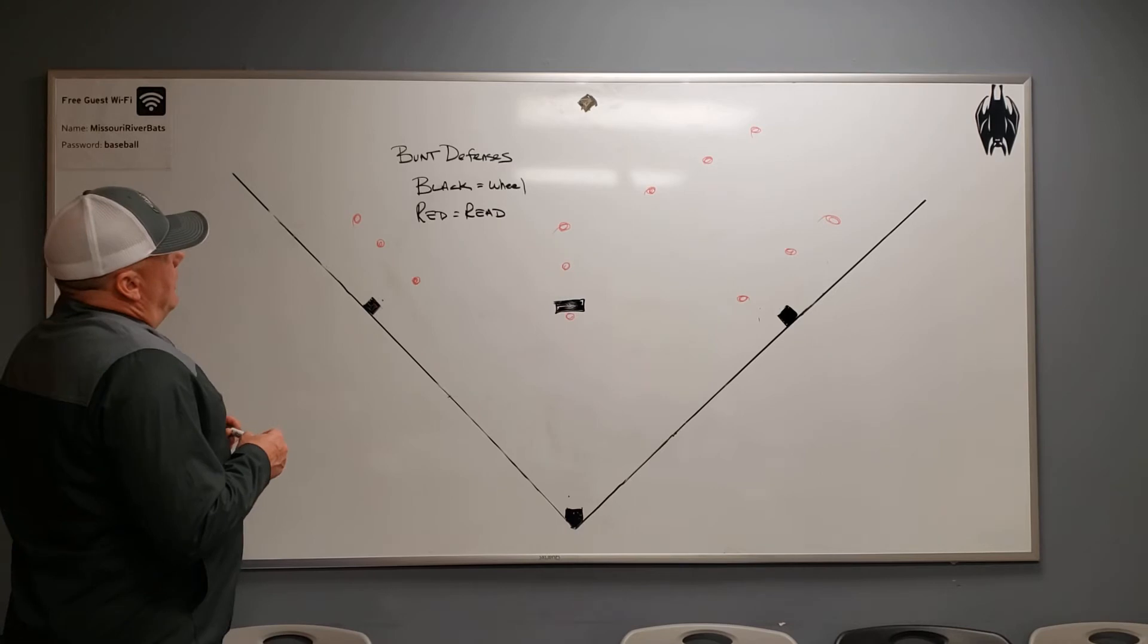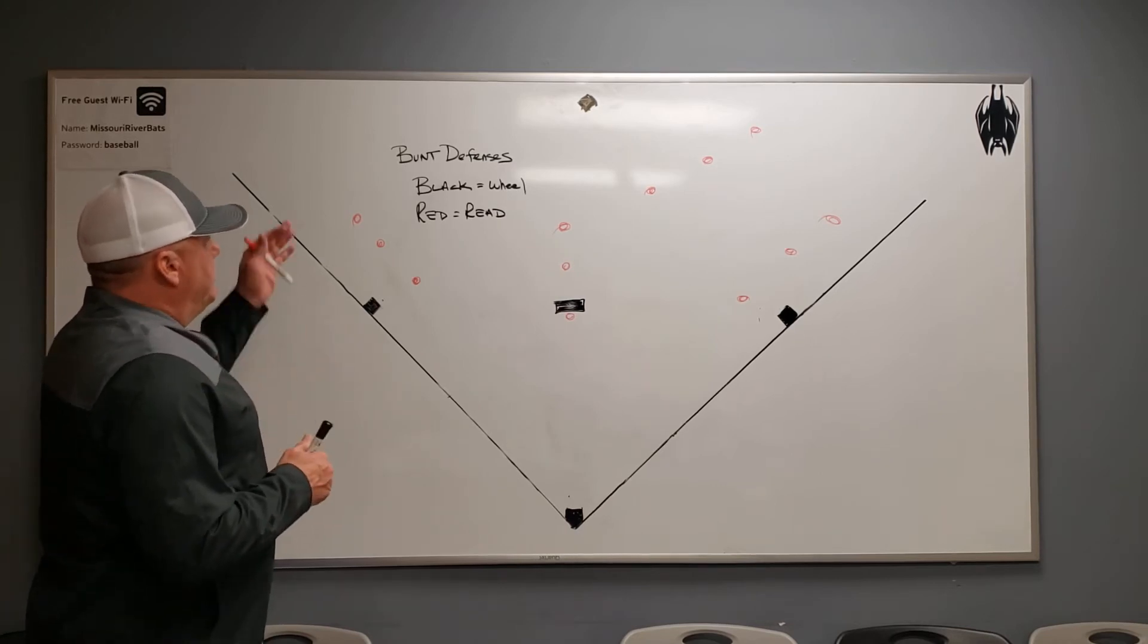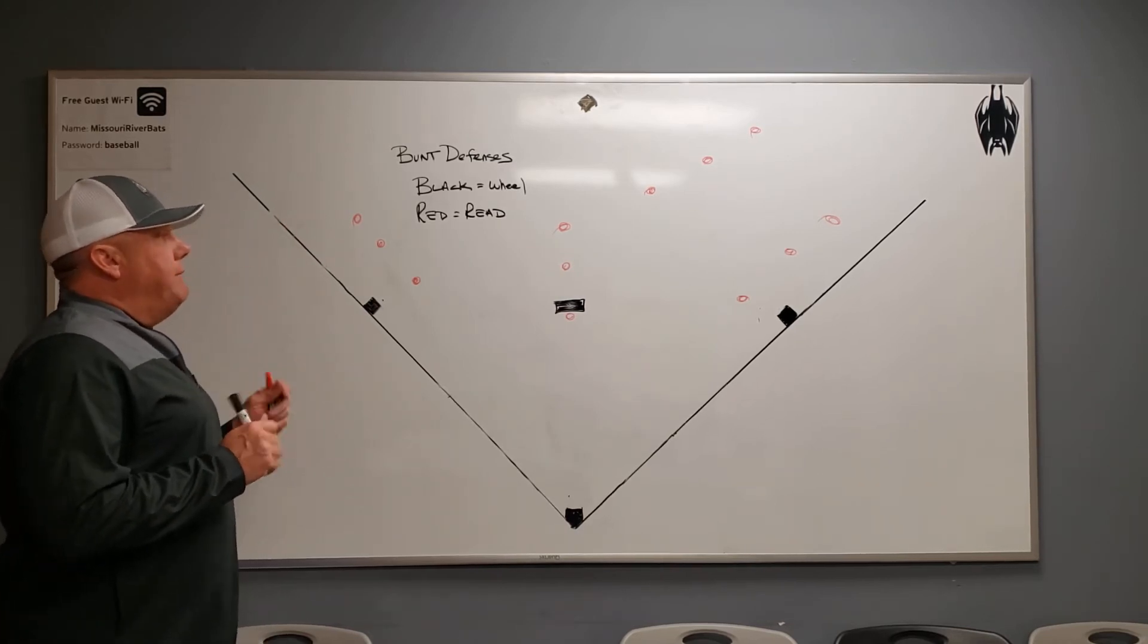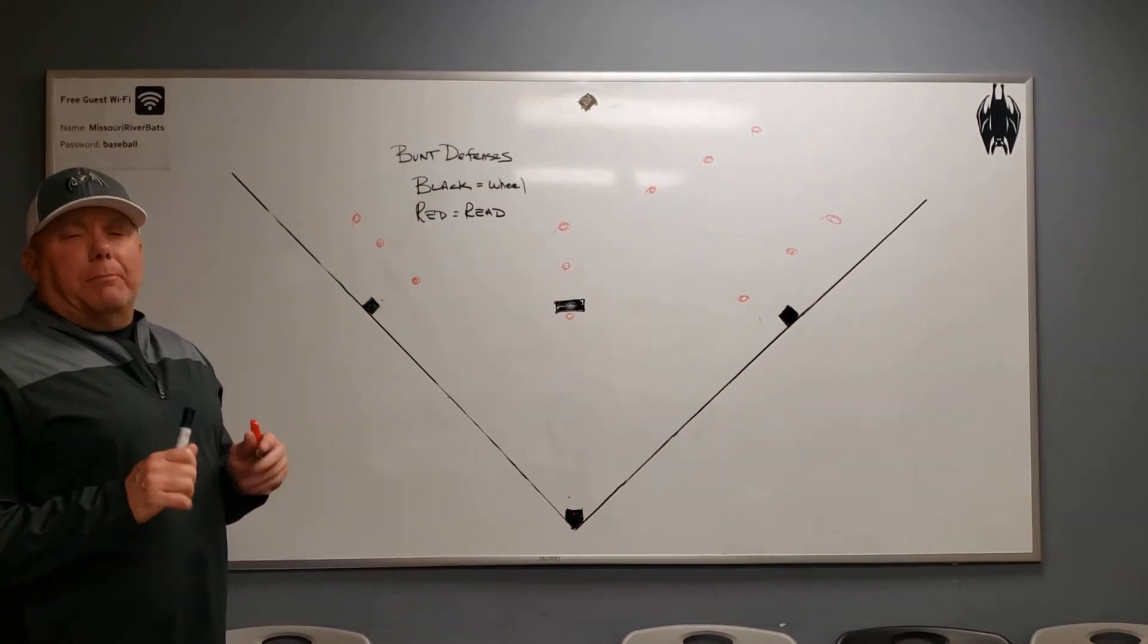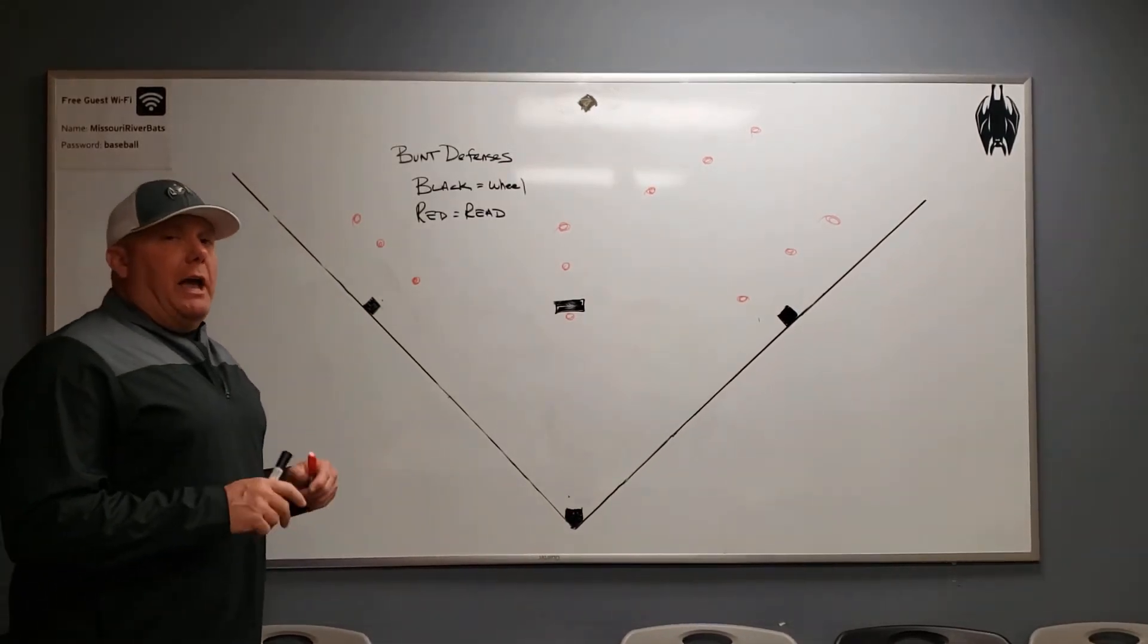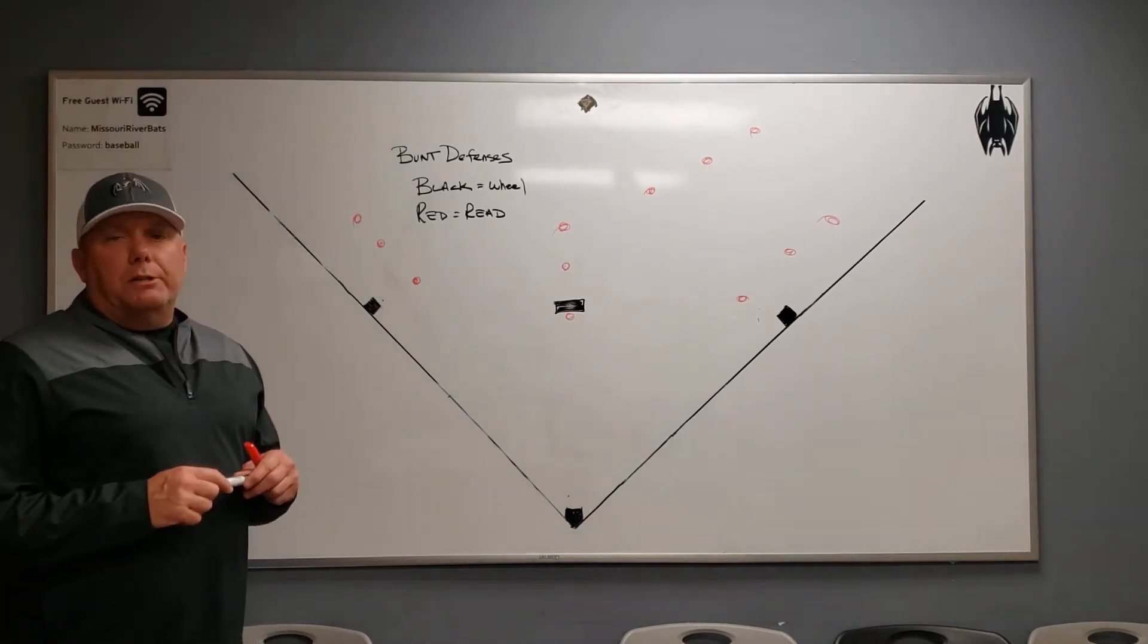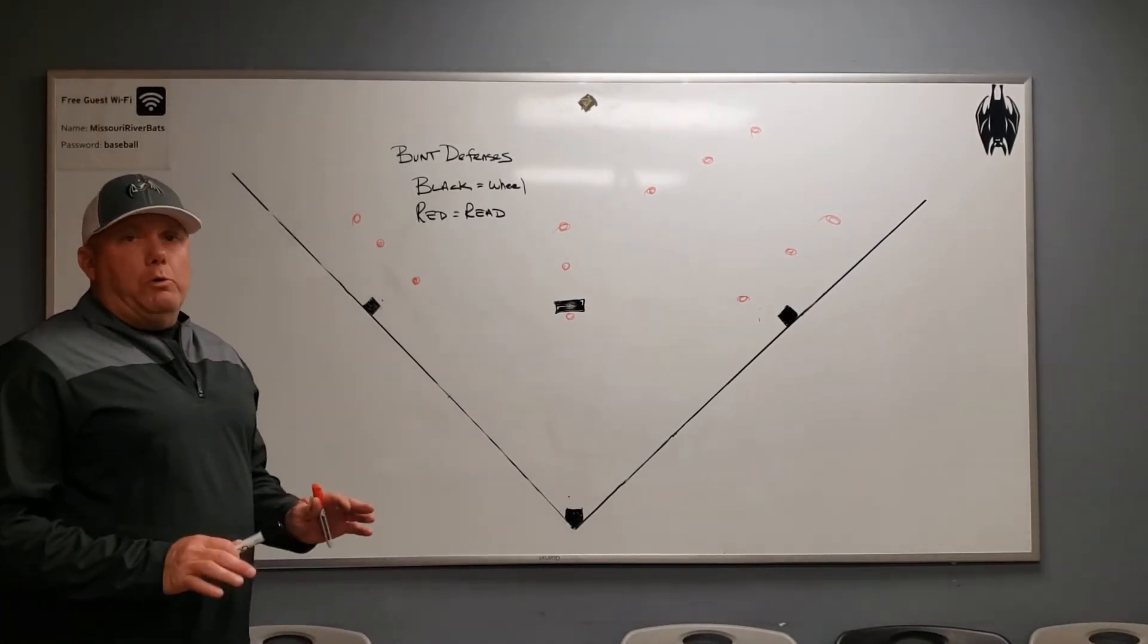So read is, well, let's go on black. Black is a simple bunt defense where you just want to record an out. You're not really concerned. It's not something that you're concerned with if it's not the end of the game, you don't have a winning run potentially being advanced. You just want an out.